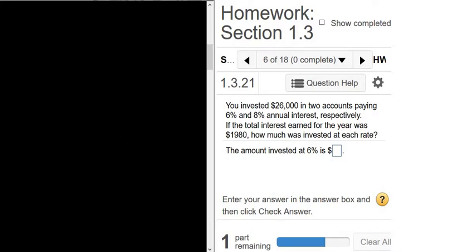You invested $26,000 in two accounts paying 6% and 8% annual interest. If the total interest earned was $1,980, how much was invested at each rate? So in this problem, we want to figure out how much money is invested at 6% and how much is invested at 8%.